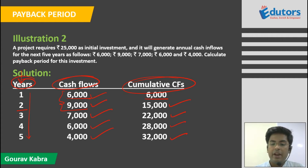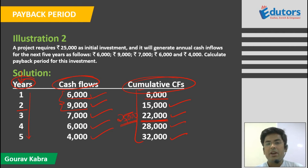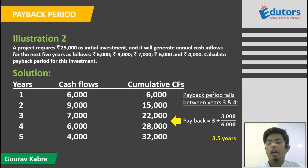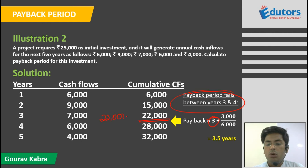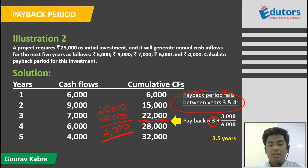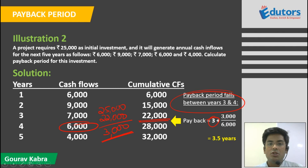Rupees 25,000 falls between year 3 and year 4, so the payback period is greater than 3 but less than 4 years. By the end of year 3 we have accumulated 22,000, falling short by 3,000. In year 4 the cash flow is 6,000, so we need only half of that year. Therefore the payback period is 3.5 years.